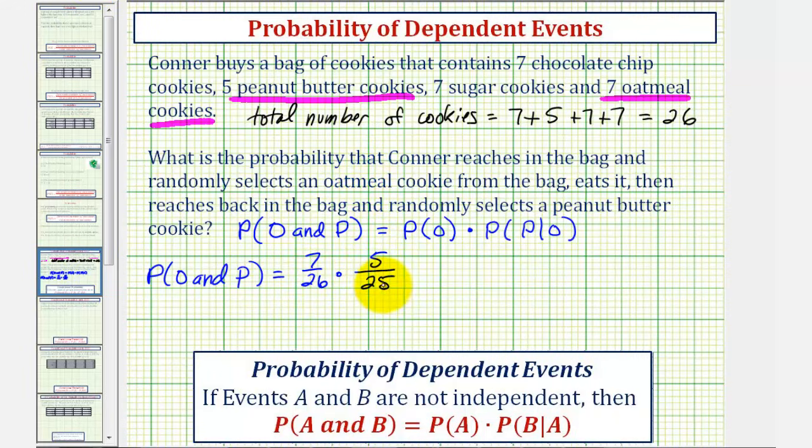Now before we multiply though, let's simplify. 5/25 does simplify, there's one five in five and five fives in 25, so our product would be 7/26 times 1/5. Multiplying the numerators we have 7, multiplying the denominators we have 130.